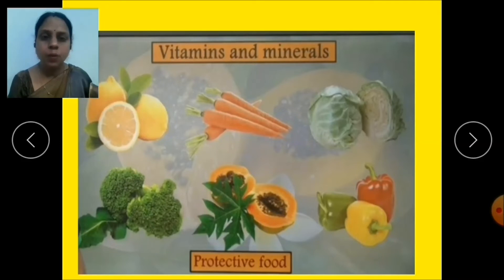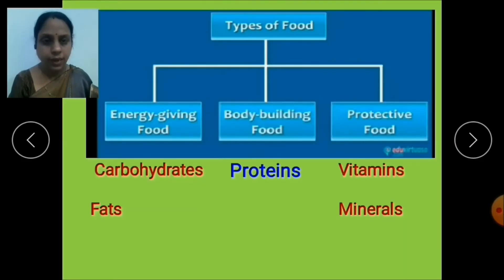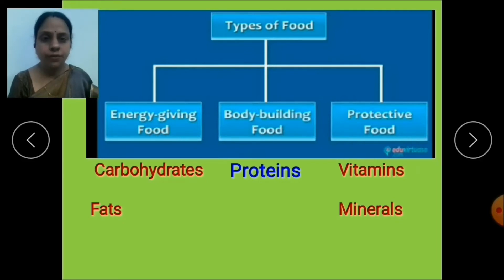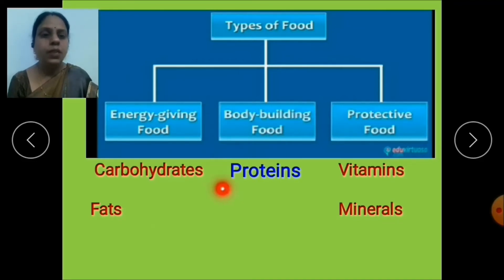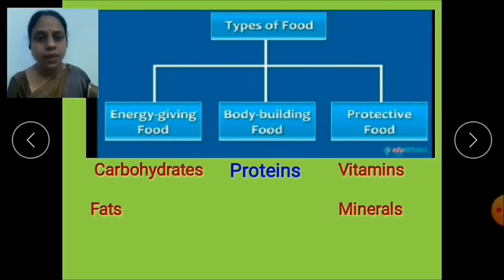There are three categories of food. Carbohydrates and fats provide us energy, so they are called energy-giving food. Proteins help in building the body, so they are called body-building food. Vitamins and minerals protect us from various diseases, so they are called protective food. All five nutrients are categorized under these three types.